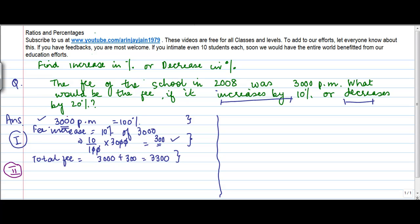What you can do is you can equate this fee equal to 100%. Now if the original fees was 100%, okay, the current fees is how much? It is equal to 100 plus 10 is equal to 110%. Now I know 100% is equal to 3000.